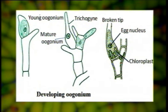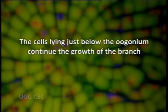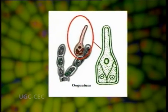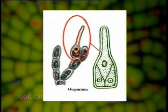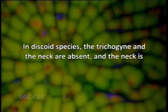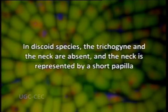The cells lying just below the oogonium continue the growth of the branch and as such the oogonium appears lateral in position. The oogonium is a flask-shaped structure; the basal swollen portion contains an egg and a chloroplast. The terminal portion is neck-like and is called the trichogyne, which contains colorless cytoplasm. However, in discoid species the trichogyne and neck are absent and the neck is represented by a short papilla.